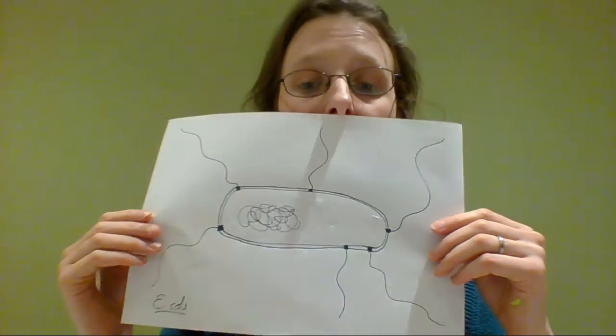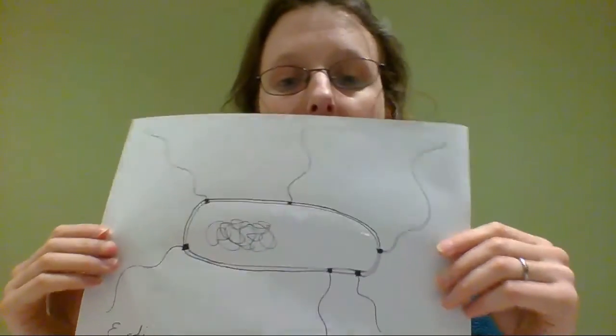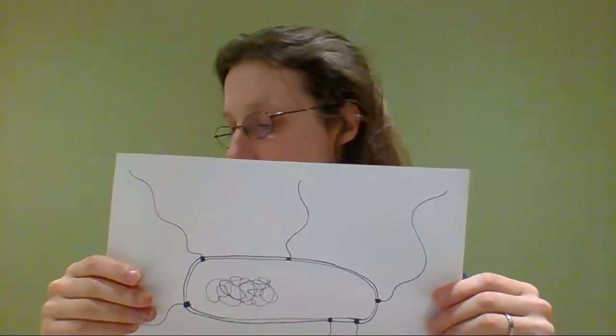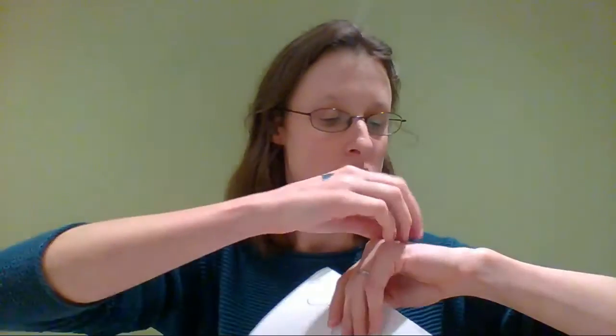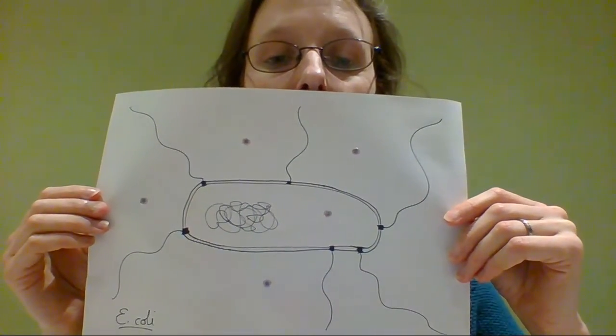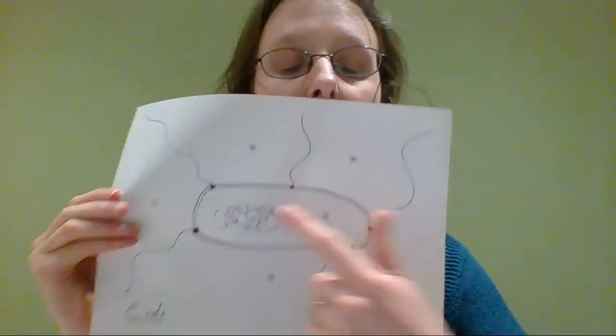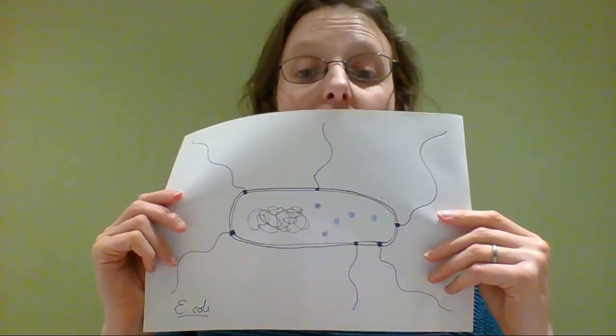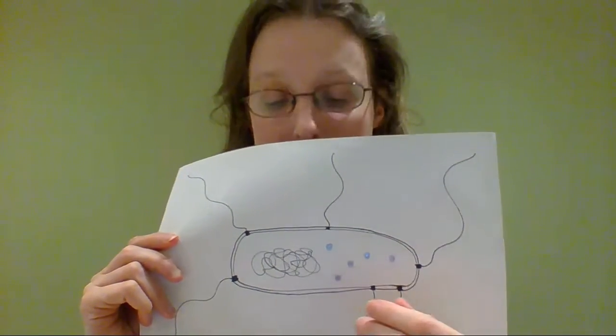So if we get back to our little E. coli, poor little chap, super hungry, swimming around looking for some food. Now luckily for this chap, what it does is it swims into some glucose. Gets inside, starts chowing it down. Loves glucose, so it supports glucose.